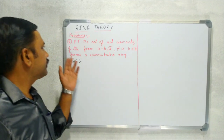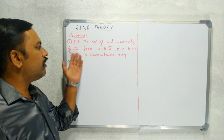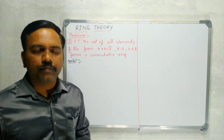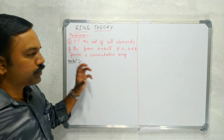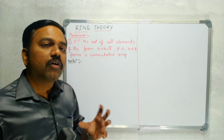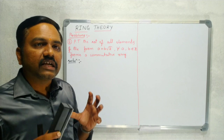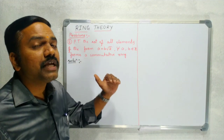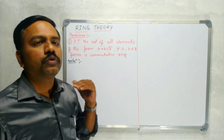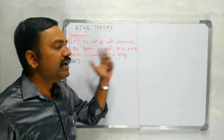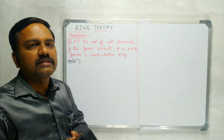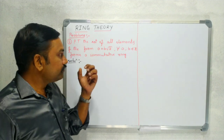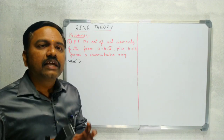The problem is: prove that the set of all elements of the form A plus B root 2, for all A, B belonging to Z, forms a commutative ring. You have to prove the set contains elements of the form A plus B root 2, where A and B are integers. That set is a commutative ring.